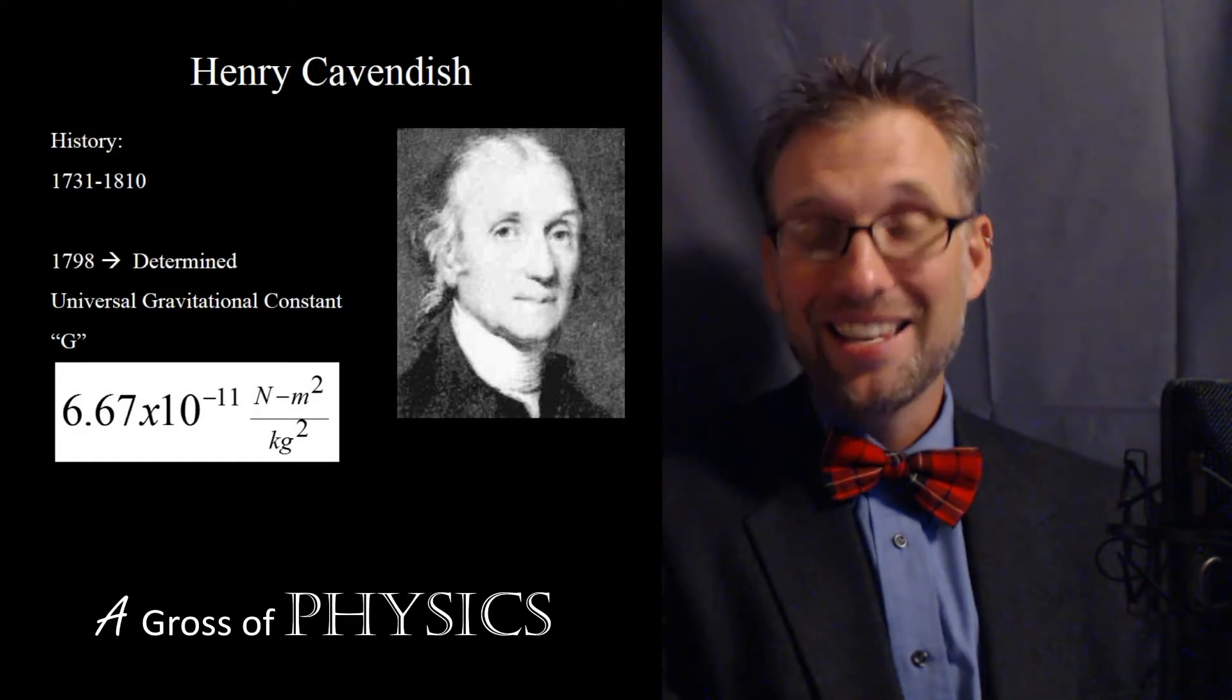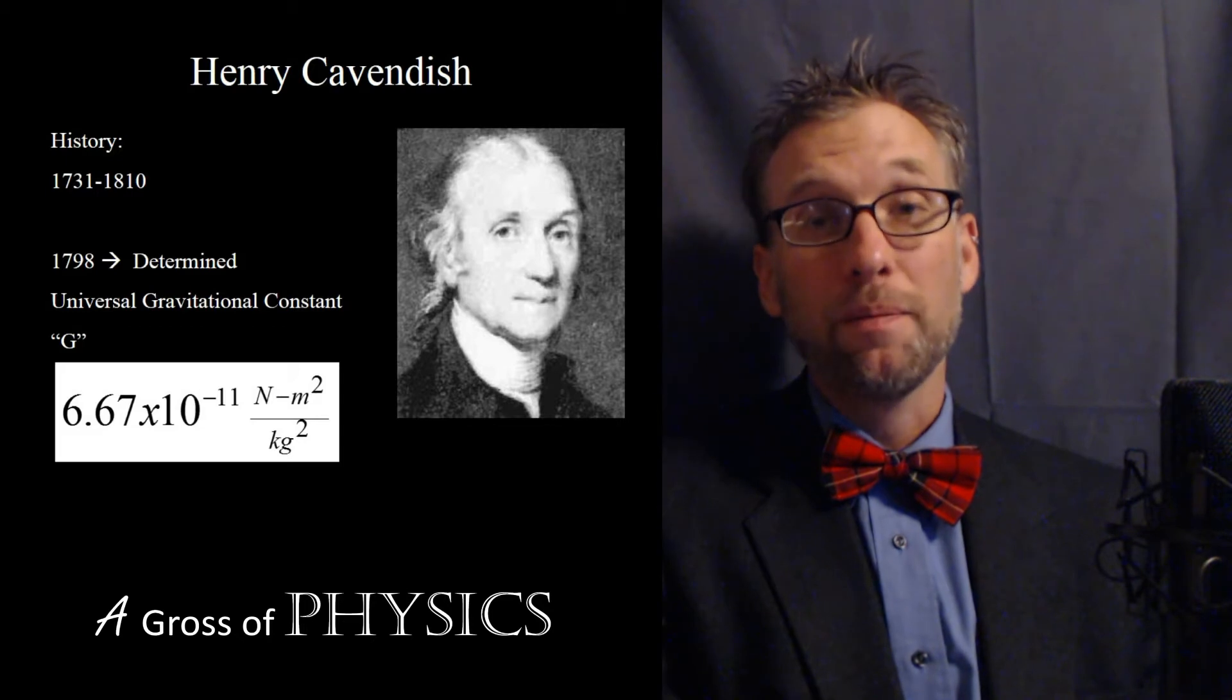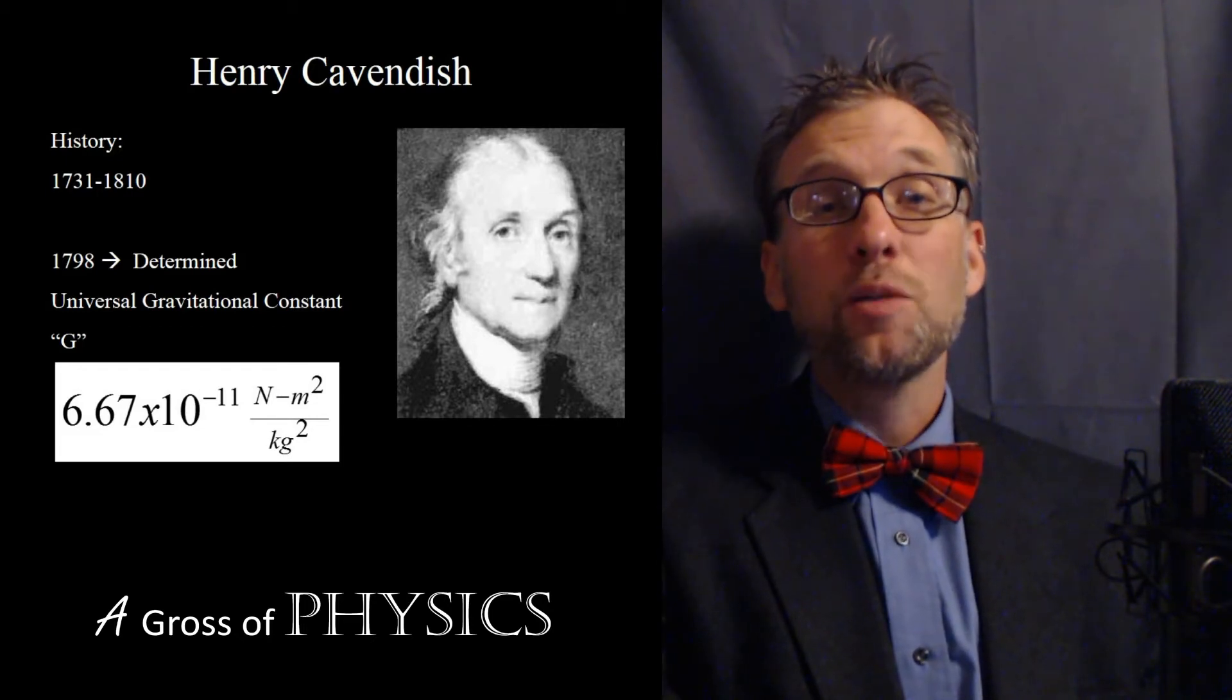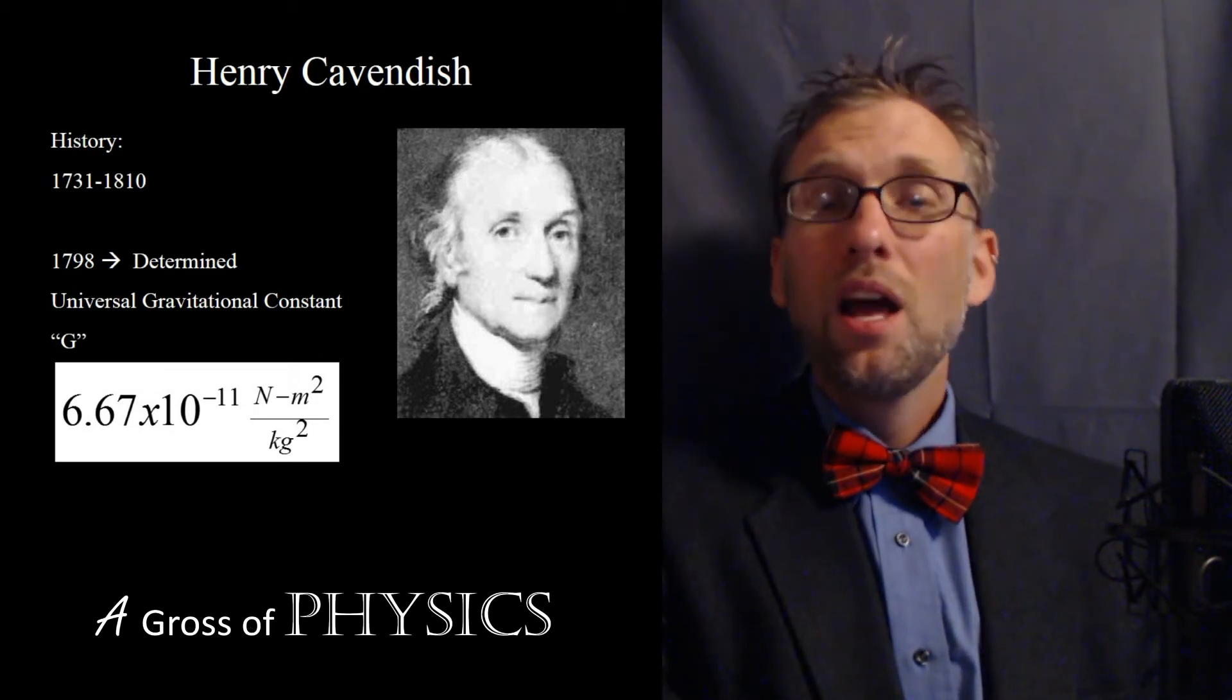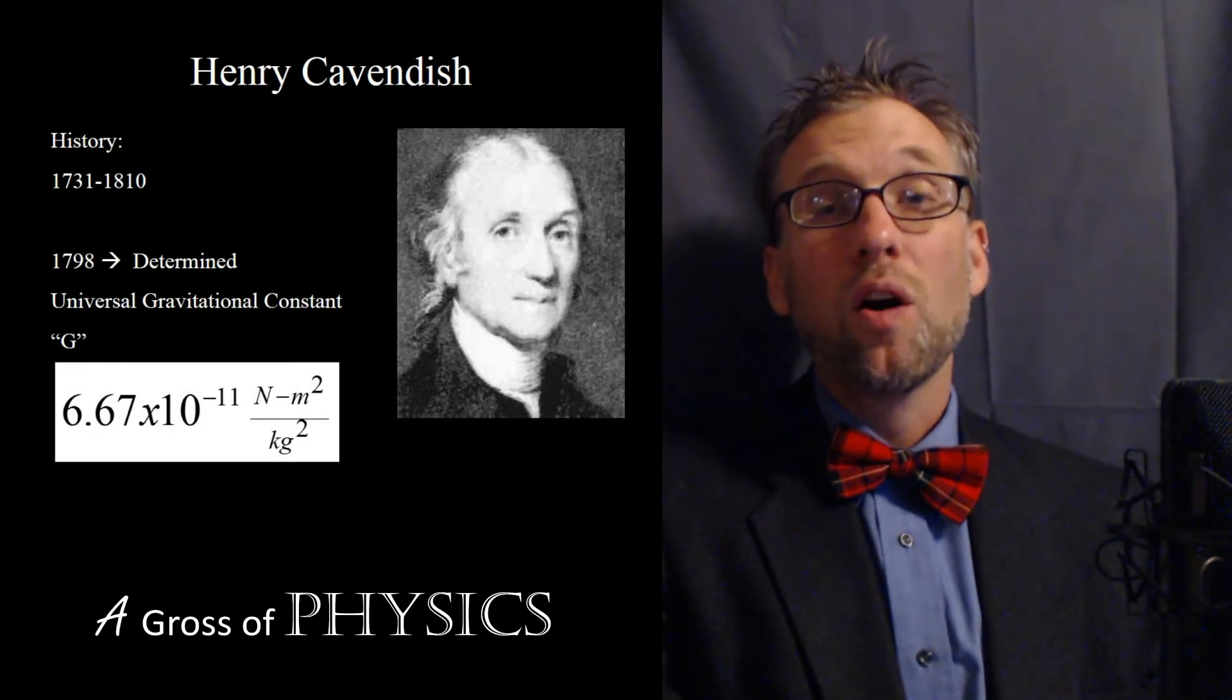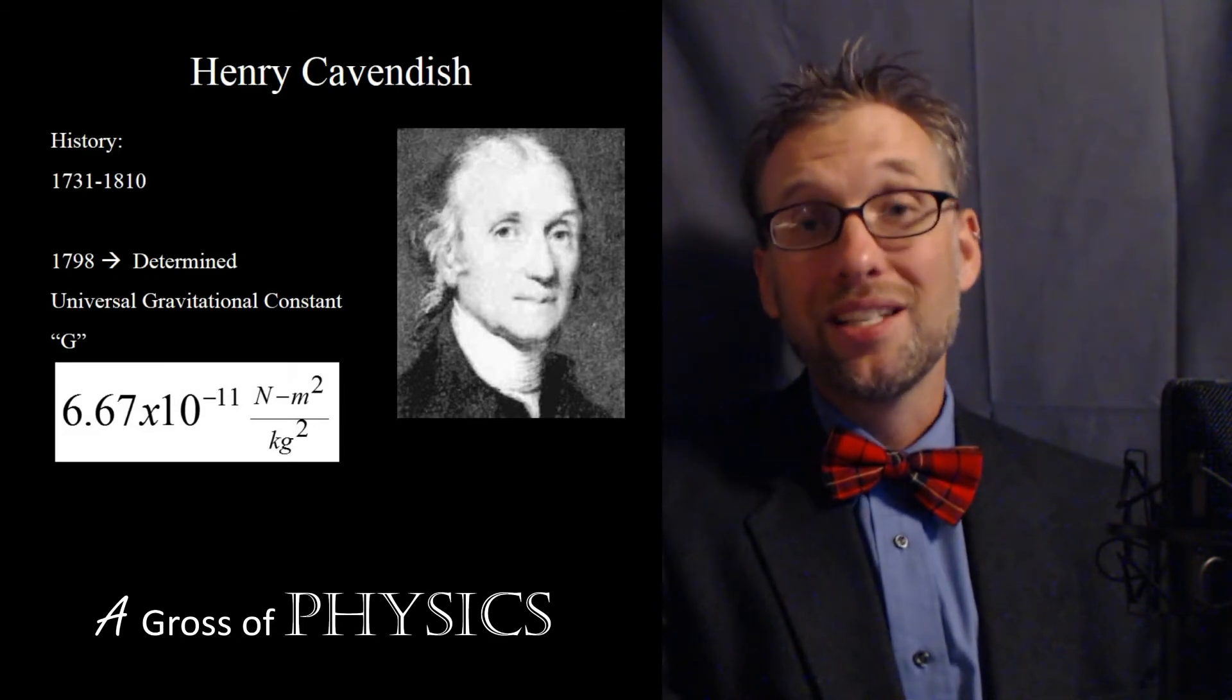Henry Cavendish came along and in 1798 he was able to determine the value of G. The value of G is very small, 6.67 times 10 to the negative 11 Newton meters squared over kilograms squared. That small number accounts for the fact that objects are able to be attractive to one another over large distances.